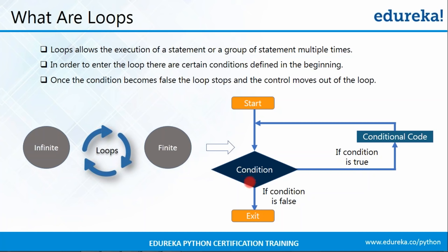The moment the condition becomes false, the control moves out of the loop and executes the statements after it. There can be two kinds of loops: finite and infinite. In infinite loops, the condition never becomes false, so the loop executes indefinitely. There is also a distinction between post-test and pre-test loops. In post-test loops the condition is checked at the end, while in pre-test loops the condition is checked at the beginning. In Python, only pre-test loops are present.